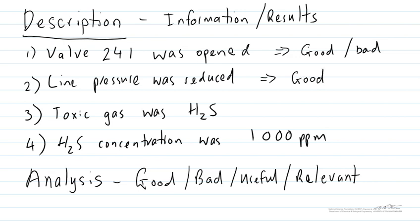The toxic gas being hydrogen sulfide we can say that's a relevant piece of information because it's going to let us assess how dangerous the situation was. And same goes for knowing the hydrogen sulfide concentration that was reached in the room that it was a thousand ppm. That's also going to be useful or relevant information for us because it allows us to quantify how dangerous the situation was.